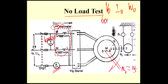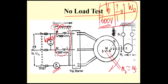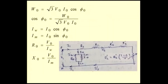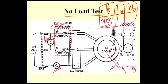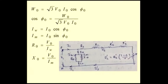V0 is the rated voltage. The condition is: you have to give the rated voltage. At 600V, you record what the current is and what the power is — this is the tabulation. W0 is read from the wattmeter. Using two wattmeters, you add the two wattmeter values and multiply with the multiplication factor. I0 is measured from the ammeter and V0 from the voltmeter. From that, W0 equals root 3 times V0, I0, cos φ0.